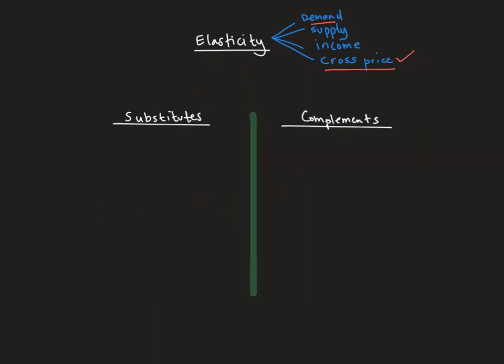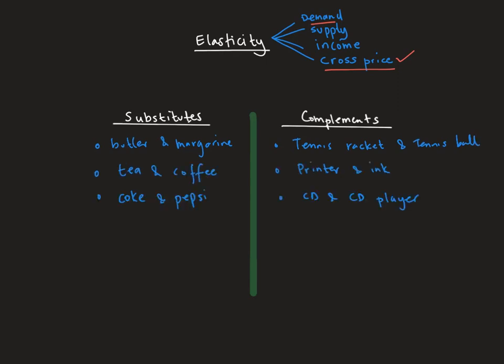Before we get into the calculations we need to understand the difference between a substitute good and a complementary good. A substitute good is where you can substitute one good for another very easily — for example butter and margarine, tea and coffee, or Coke and Pepsi. A complementary good is something you can only use combined with another product — for example a tennis racket and a tennis ball, a printer and ink, or a CD and CD player.